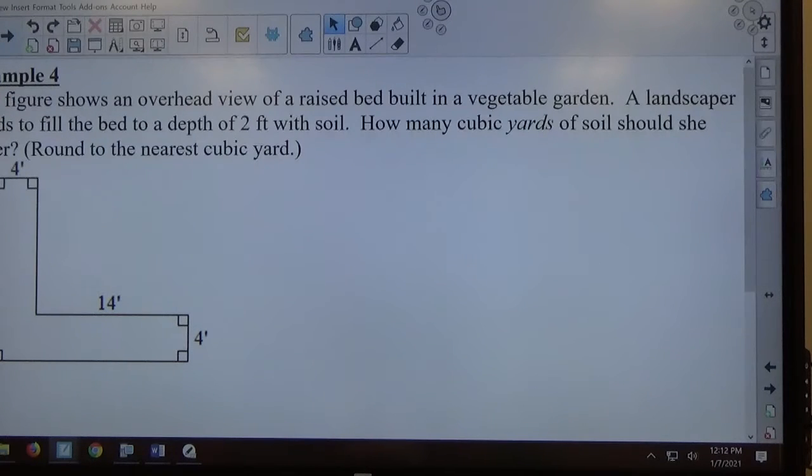Example 4, the figure shows an overhead view of a raised bed built in a vegetable garden. A landscaper needs to fill the bed to a depth of 2 feet of soil. We're looking at the top of this thing. It extends 2 feet downward. This has depth to it, but we're just looking at the 2-dimensional base of this thing. They're giving me the base.